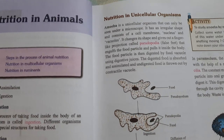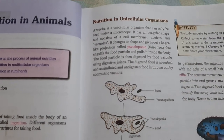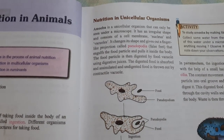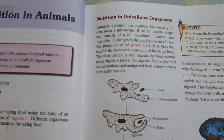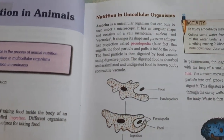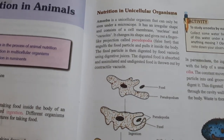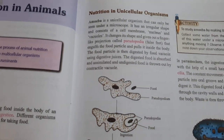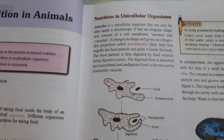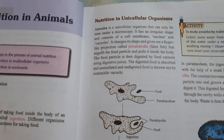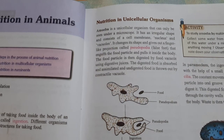The food particles are then digested by food vacuoles using digestive juices. The digested food is absorbed and assimilated, and undigested food is thrown out by the contractile vacuoles.